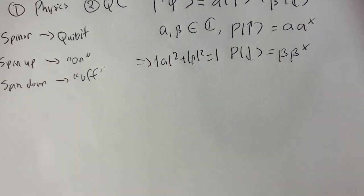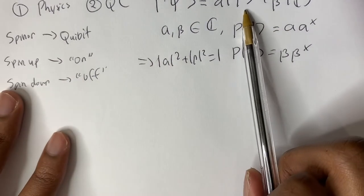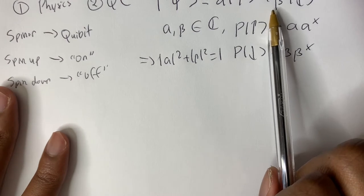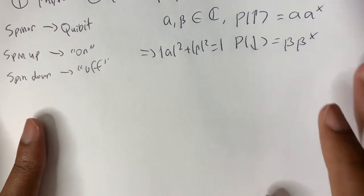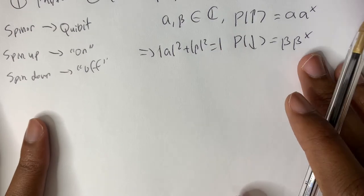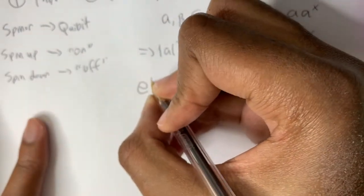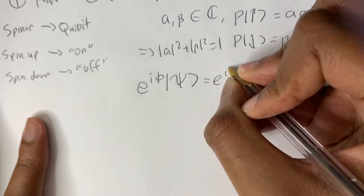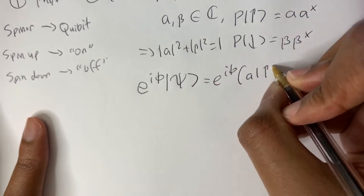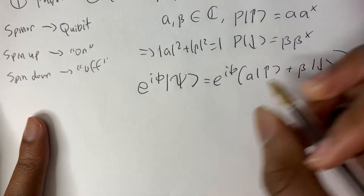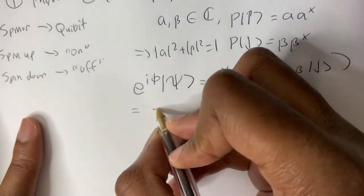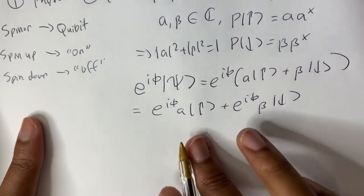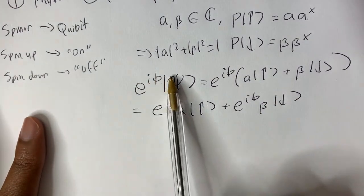Now we are going to try to manipulate this equation in a way where we can make most of our degrees of freedom real. In this video we are going to try to have only one complex degree of freedom, and then two real degrees of freedom. To do that, we need to motivate the concept of a phase factor. So let's say I multiply e^(iφ) by my general spinor state — what happens?